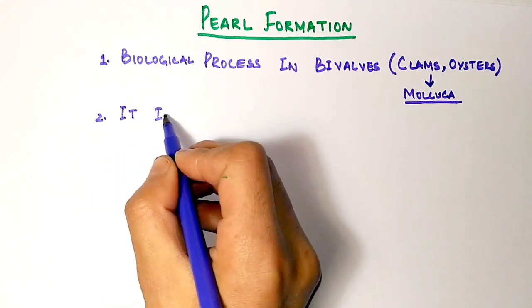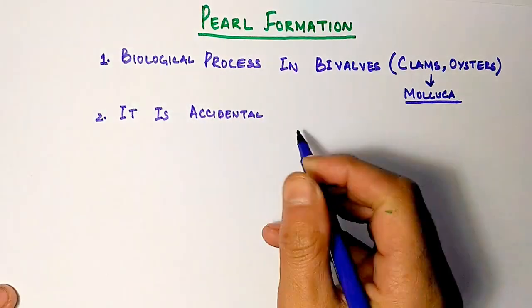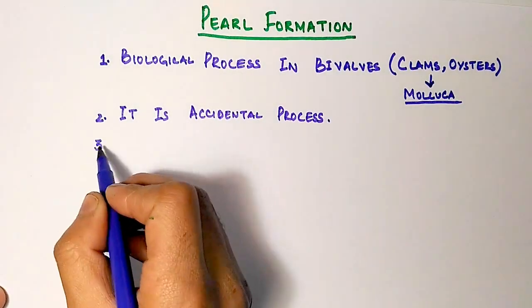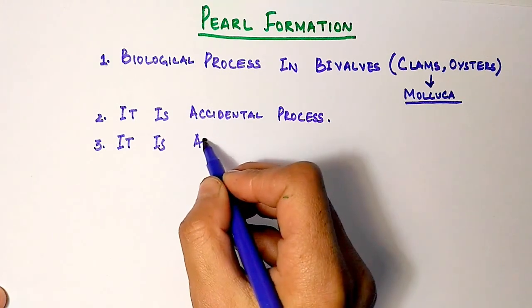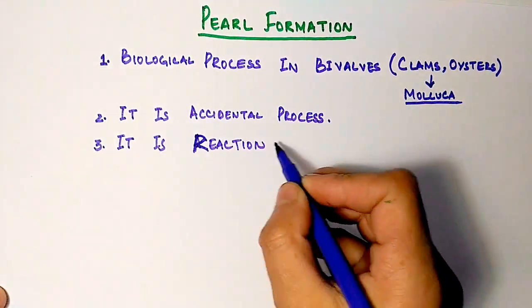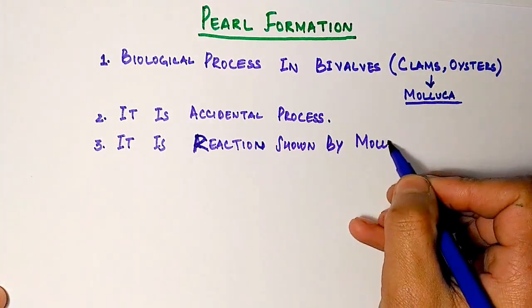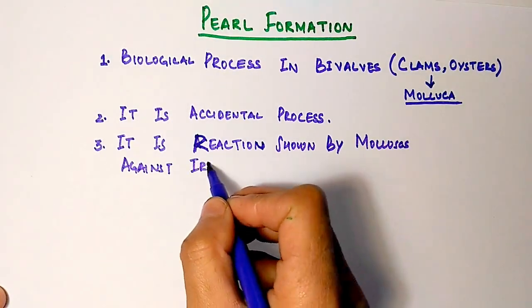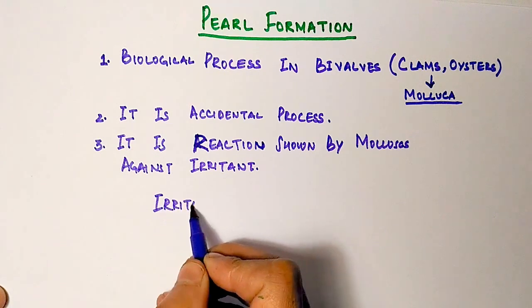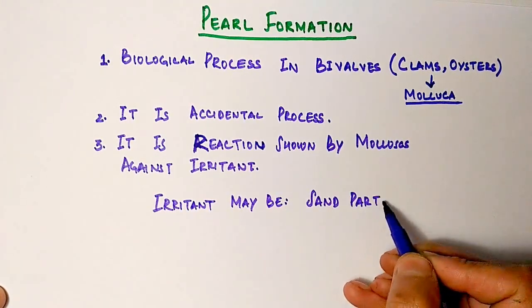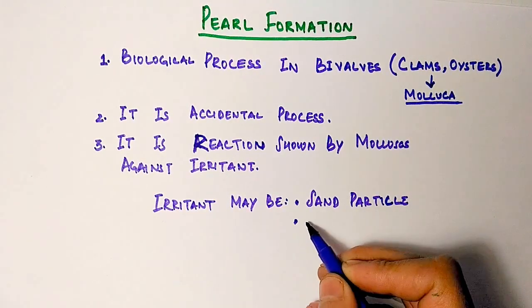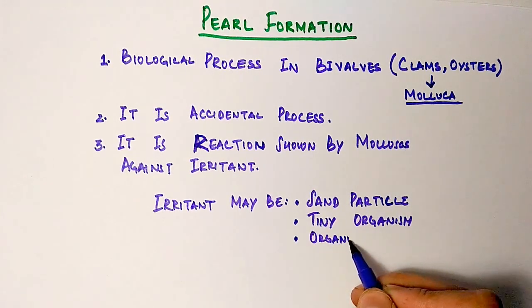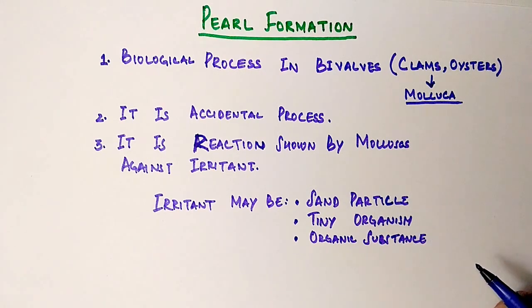Second thing is that it's an accidental process rather than a life process of these organisms. The third thing is that it's a reaction shown by molluscs against an irritant. So like we have an immune system, we show reaction towards some foreign particles. In the same way, these organisms show a reaction towards an irritant, and this irritant may be a foreign particle in the form of sand particle, a tiny organism or a parasite, or any organic substance.